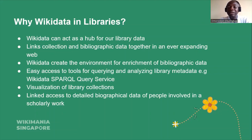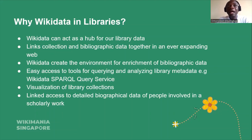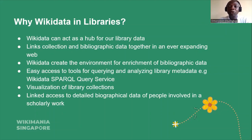There is also the fact that Wikidata creates room for enriched bibliographic data. In a regular cataloging system, we create information for the name of an author, the title of a work, the place of publication, the year of publication. But what if, instead of just having the name of an author, we can have more information about the author — like where the author is from, other publications they have, and other libraries that have content about that author? This can be made possible with Wikidata, because it can help show this link and relationship and connect one entity with another entity.